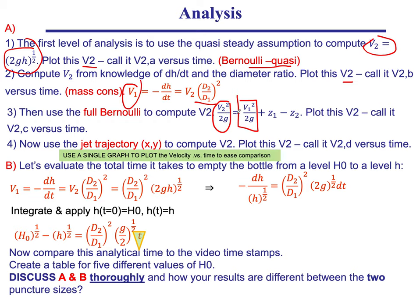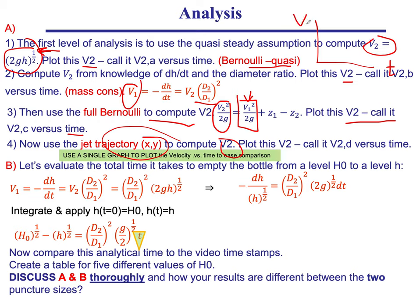For the third approach, use the full Bernoulli equation where p1 = p2 and v1 is non-zero — taken from dh/dt. This gives a third curve of v2 versus time. Then use the x-y jet trajectory equation from the previous slide as a fourth method. Now we have four ways to compute v2 from our data, and we want to plot them all on the same graph.